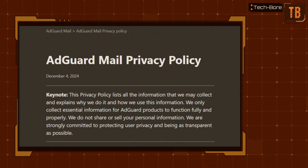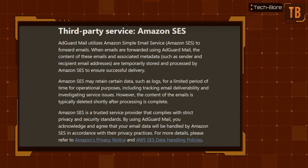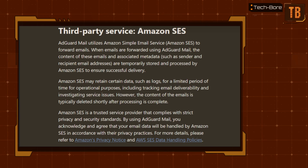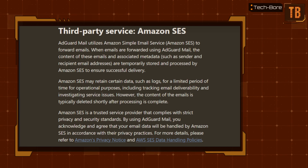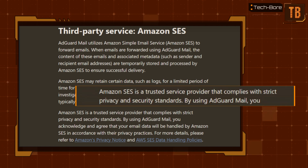Now it's time to discuss the privacy policy. To their credit, AdGuard was kind enough to spell out the reasons why they need certain bits of data using non-legal jargon. However, there was definitely a section in the policy that raised an eyebrow. It would seem Amazon's email forwarding service is the backbone for AdGuard's own service. What's troubling is the fact that Amazon collects and stores the contents and metadata of your emails. Allegedly, the data is stored temporarily and then deleted after a certain time, but the storage time is not specifically defined — for all we know, it could be days, weeks, or even months. In all fairness, I'm not completely faulting AdGuard for using such a service, as it's still in beta and Amazon's service could just be a temporary thing. What I do criticize AdGuard for is claiming Amazon as a trusted provider that maintains privacy and security standards — something that can be easily disproven.